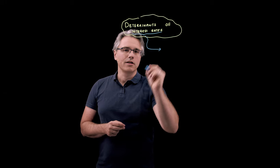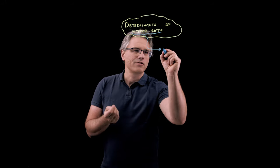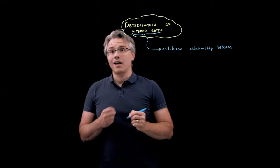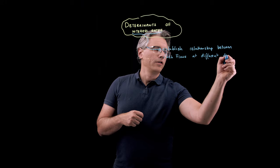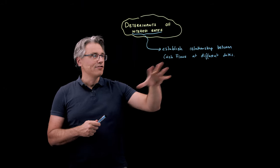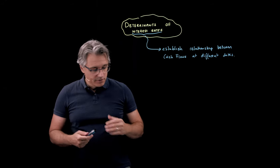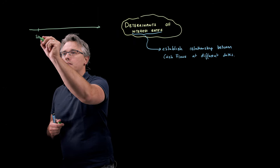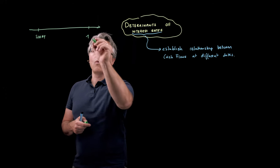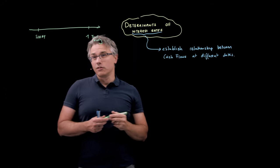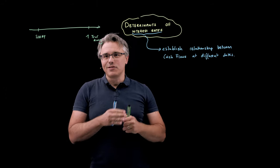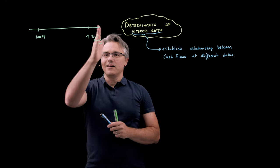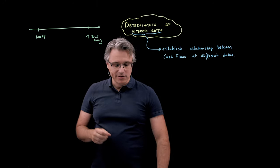The way your curriculum defines it is that interest rates establish the relationship between cash flows that occur at different dates — or, as your curriculum puts it, it's the relationship between differently dated cash flows. So if you imagine a timeline, let's say this is today and this is a moment in time which is one year away. The interest rate is going to allow us to establish relationships between cash flows occurring on the one hand today, and on the other hand in one year's time.